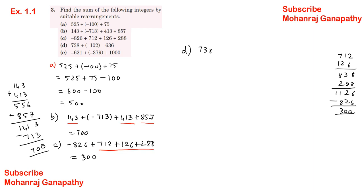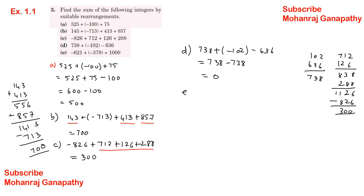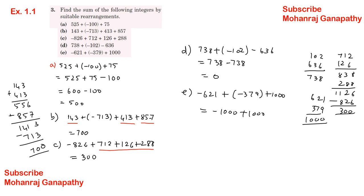Part c: 738 plus minus 1002 plus minus 636. Rearranging: minus 1002 plus minus 636 — minus symbol: minus 738, which equals zero when added with 738. Part d: minus 621 plus minus 379 plus 1000. Rearranging: 621 plus 379 equals 1000, so minus 1000 plus 1000 equals zero.